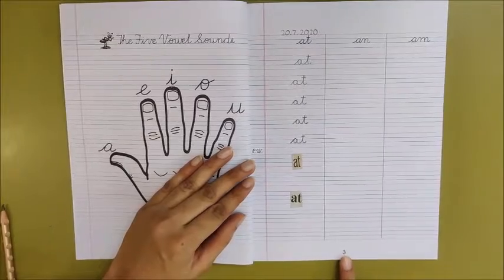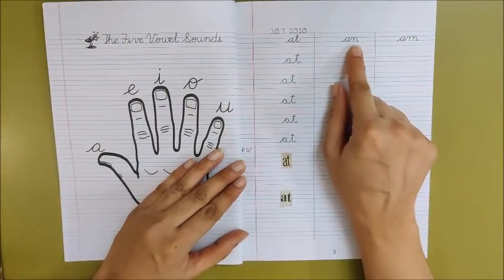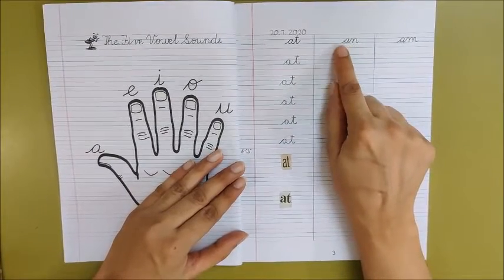Now on page number 3 children, we are going to do an. We will join and write an. A, na, an.